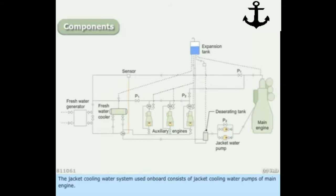The jacket cooling water system used on board consists of jacket cooling water pumps of main engine. These pumps take suction from the de-aerating tank and circulate the cooling water through the main engine.